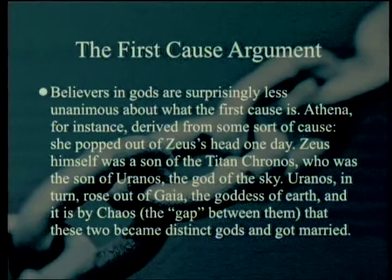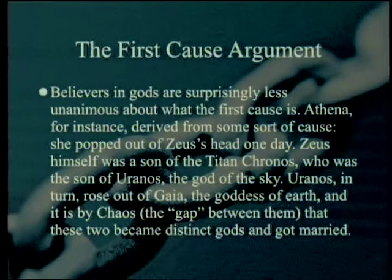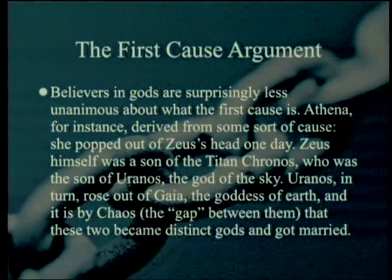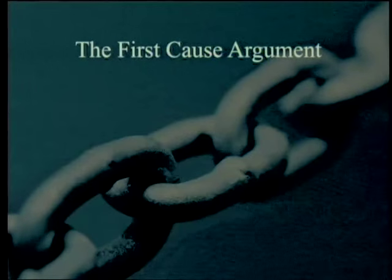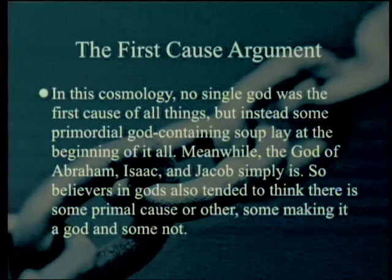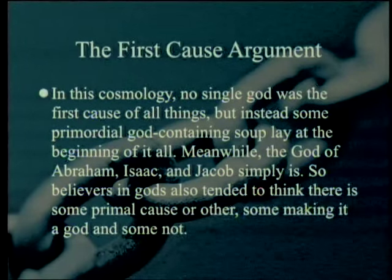Believers in gods are surprisingly less unanimous about what the first cause is. Athena derived from some sort of cause — she popped out of Zeus' head one day. Zeus himself was the son of Titan Kronos, who was the son of Uranus, who rose out of Gaia. In this cosmology, no single god was the first cause of all things, but some primordial god-containing soup lay at the beginning of it all. Meanwhile, the God of Abraham, Isaac, and Jacob simply is.